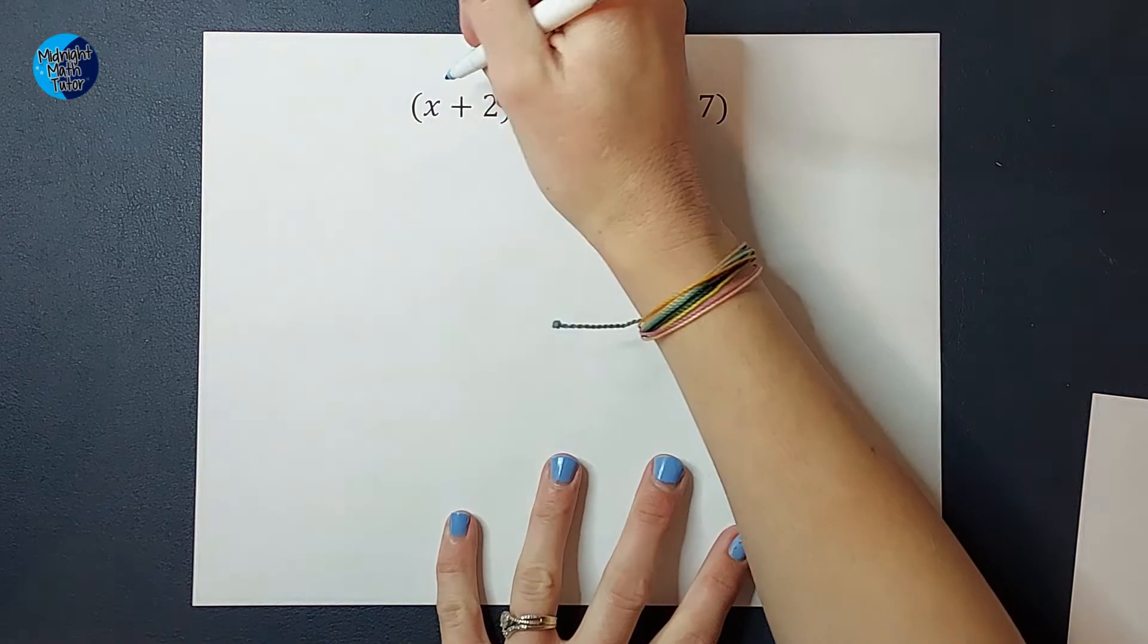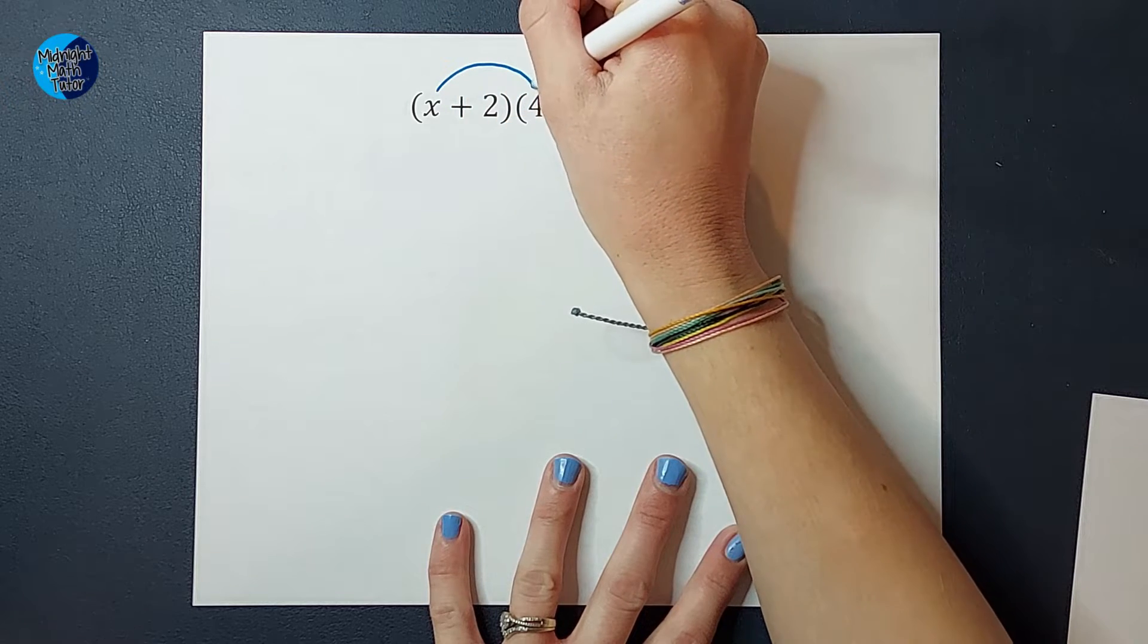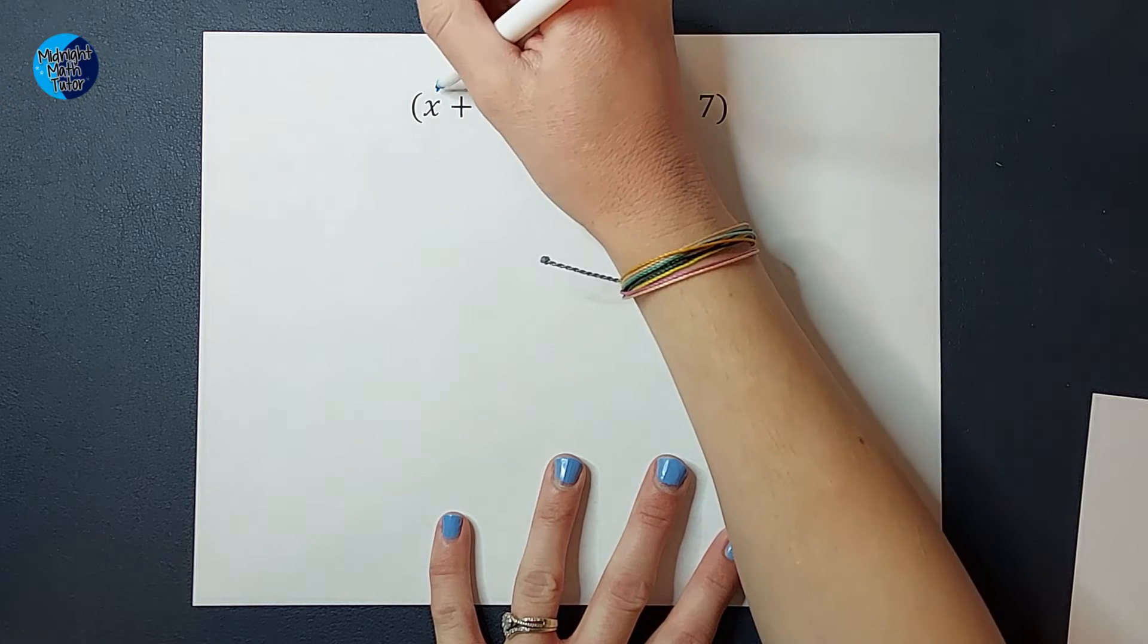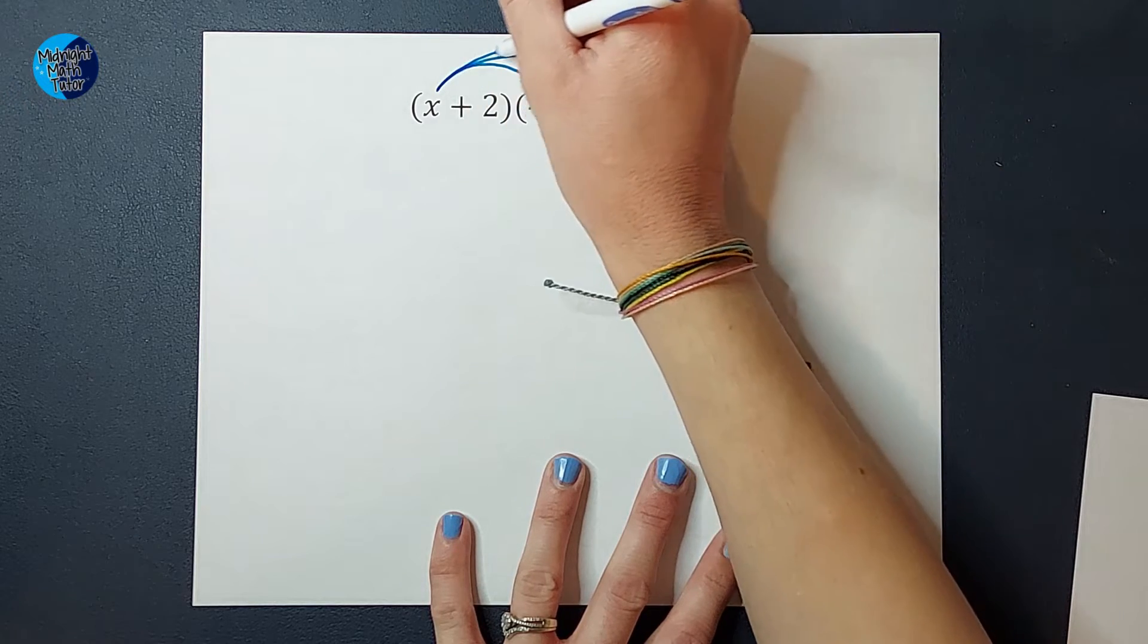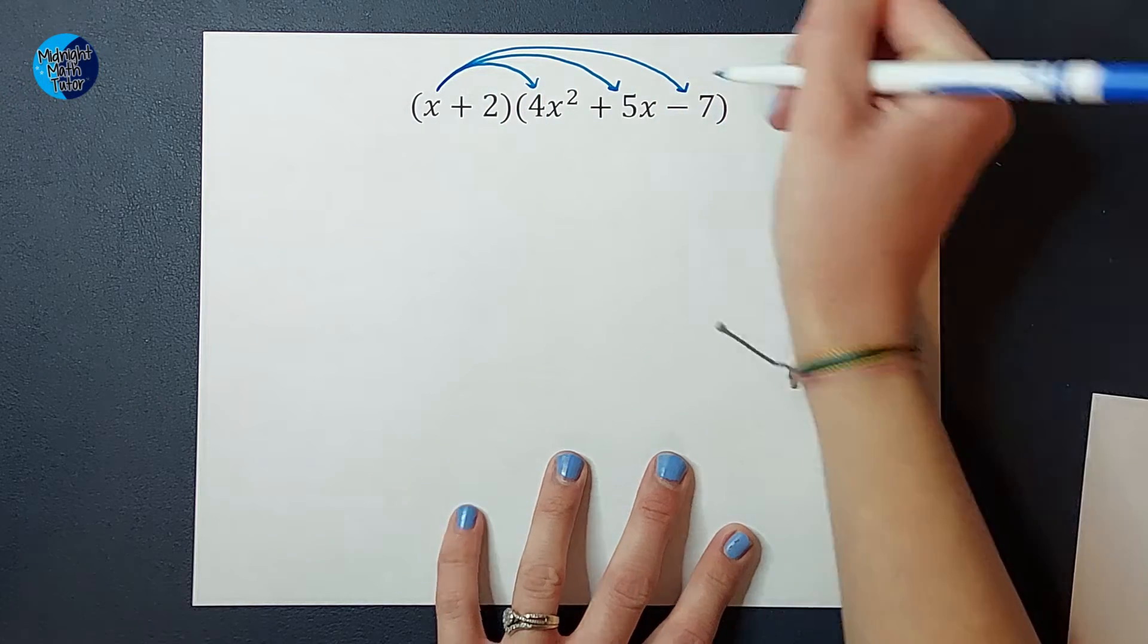So I like to use arrows. We got to multiply the x to the 4x squared to the 5x and to the negative 7.